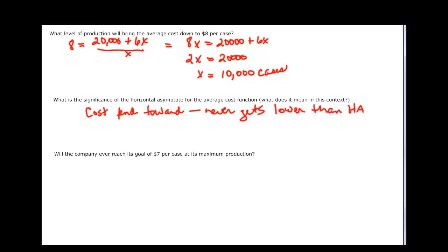What we've got up here, if we look at our degrees, this is degree 1 and this is degree 1. So n equals m. That means it's y equals a over b. In our case, it's y equals 6, because the coefficient would be 6 over 1. It's telling us it will never be lower than $6.